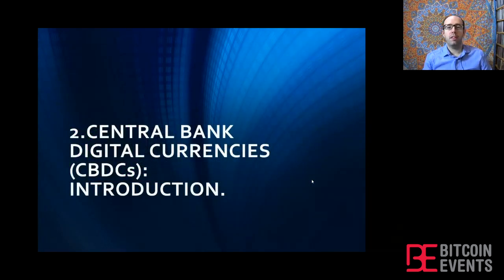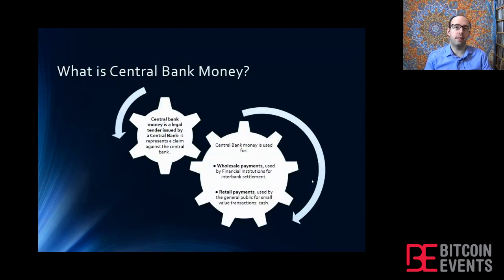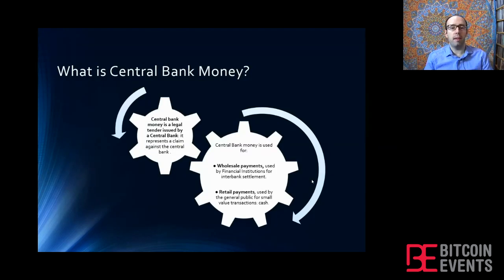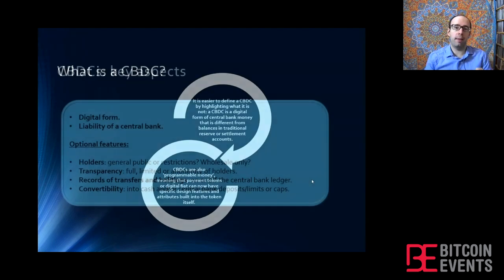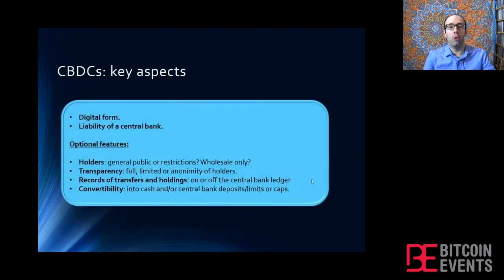Let's talk about central bank digital currencies — what CBDCs exactly are. Central bank digital currencies are a kind of central bank money, and central bank money is a legal tender issued by a central bank, which represents a claim against that central bank. A CBDC is nothing else but a digital version of that central bank money. So when we talk about the digital yuan or the digital euro, we are talking about the digital version of the yuan and euro that already exist.